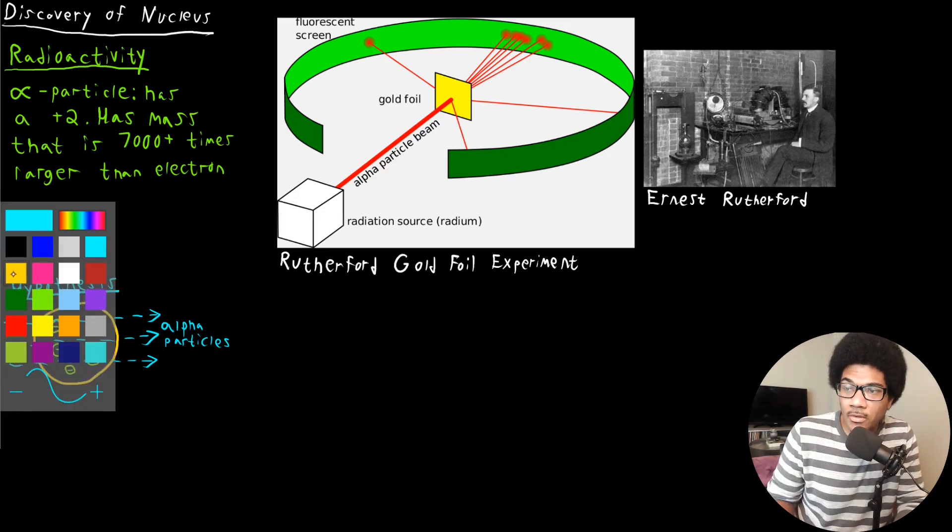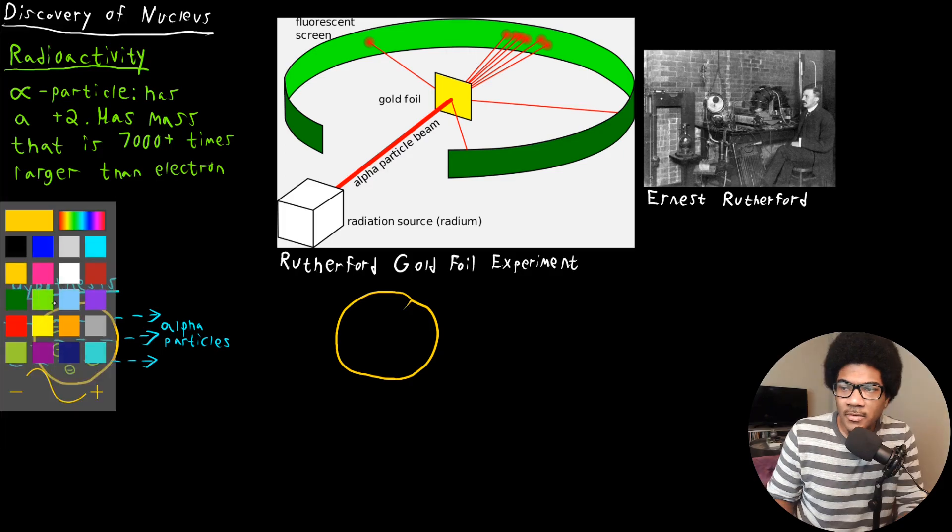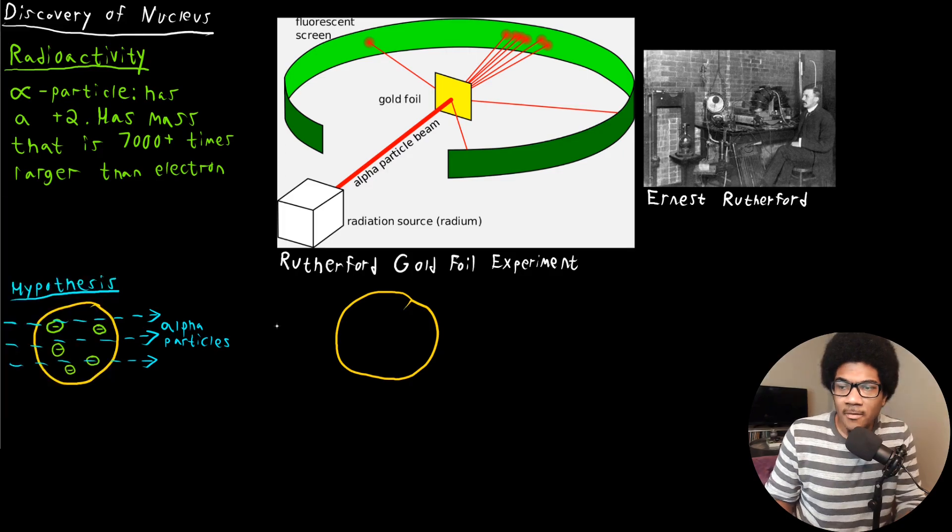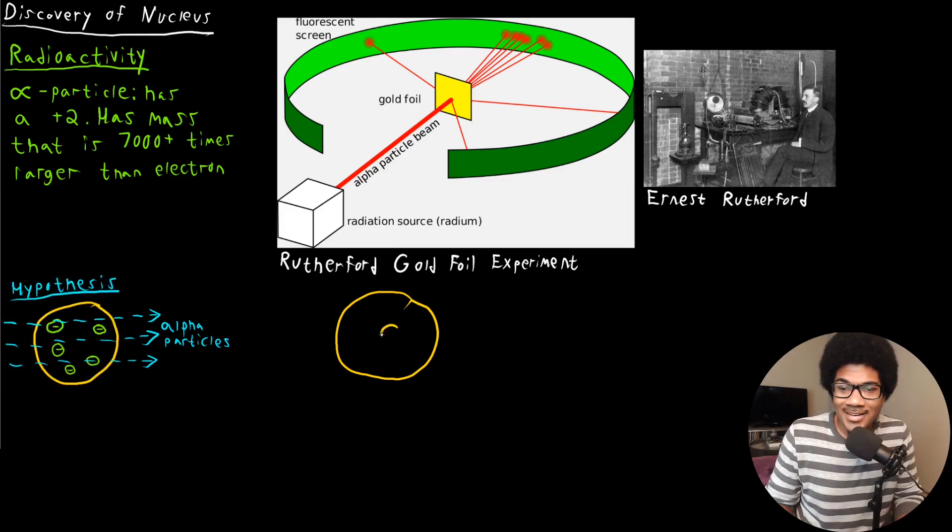And so this was how Rutherford modified the atomic model to account for this deflection of these alpha particles. So let's draw another circle here. So he still has the basic premise of the atom, that there's some positive, some negative charge there in order for it to be neutrally charged. But what he proposed is that instead of having a sea of positive charge, there is a densely populated cluster of positive charge that sits at the center of the atom. And then the electrons, the negatively charged particles are still just floating around out there to make up the rest of the volume of the atom.